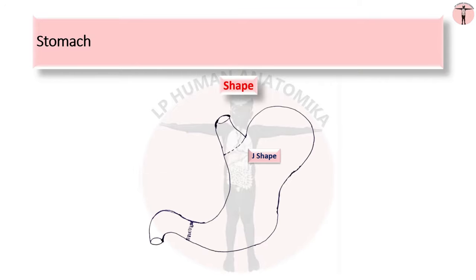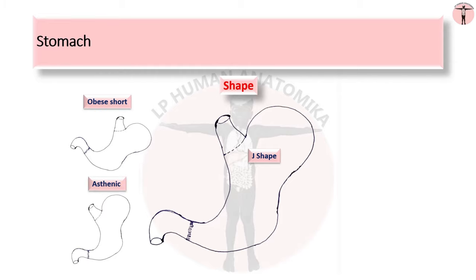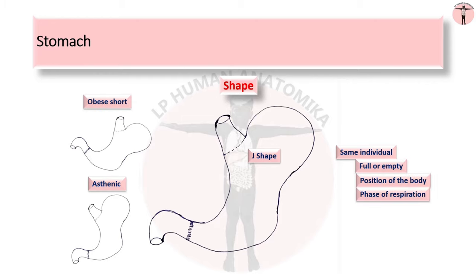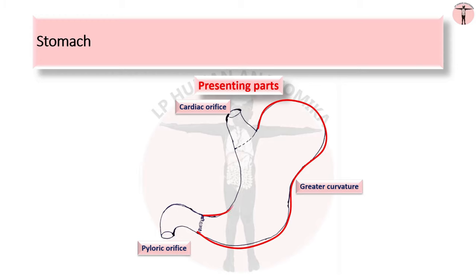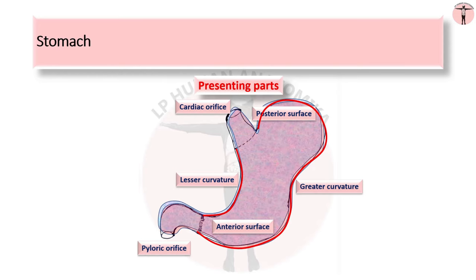The stomach is roughly J-shaped, although its size and shape vary considerably. It tends to be high and transverse in obese, short subjects, and vertically elongated in tall, thin individuals. Even in the same person, its shape depends on whether it is full or empty, the position of the body, and the phase of respiration. It has two openings — cardiac and pyloric orifices — two curvatures, two surfaces, and three subdivisions: fundus, body, and pylorus.